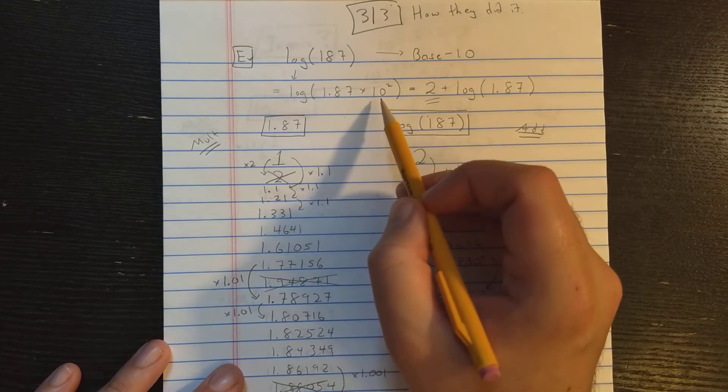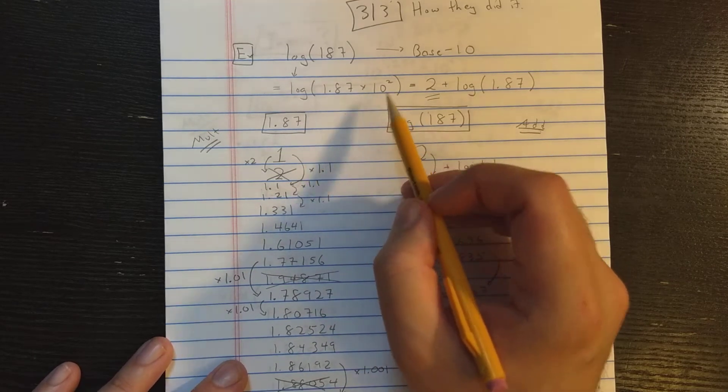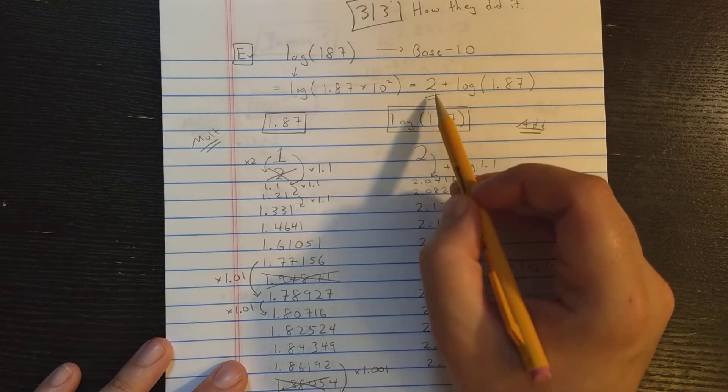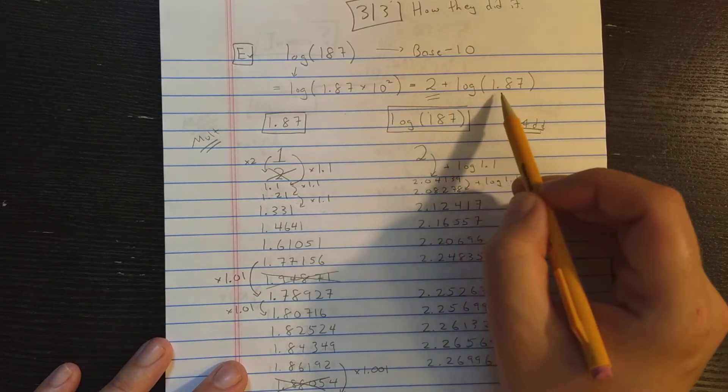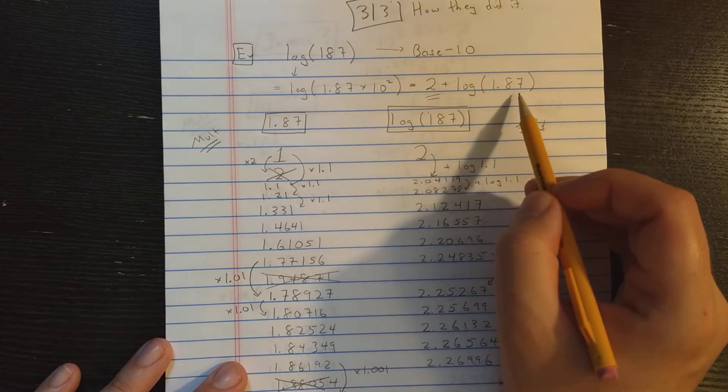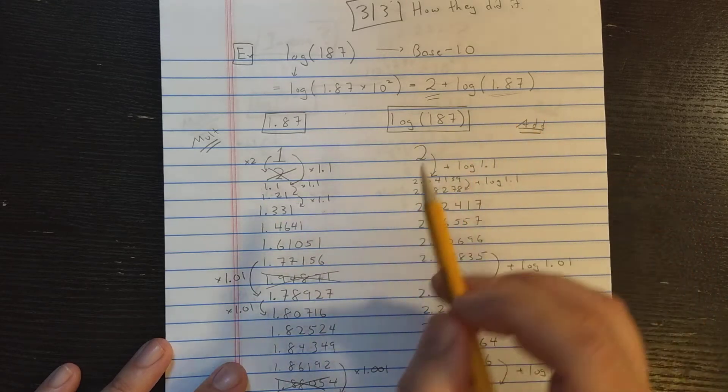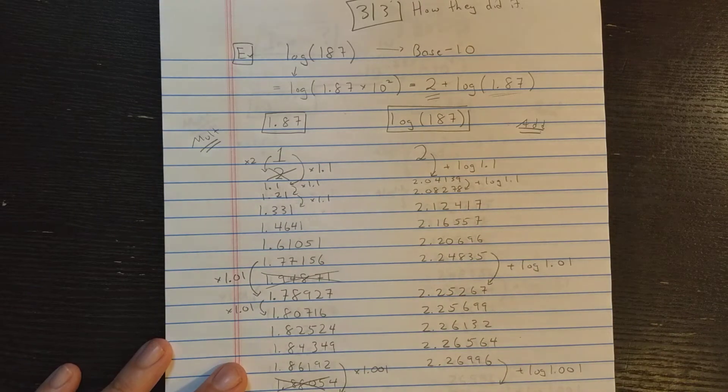So the first thing that the calculator will do is it will say, since I have times 10 to the 2, the logarithm needs to start with 2 plus the logarithm of 1.87 according to the rules for logarithms. So what I really need is the logarithm of this 1.87, and I'm just going to add 2 to it.